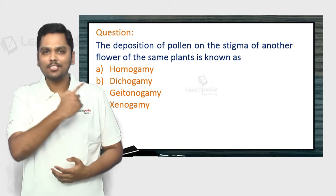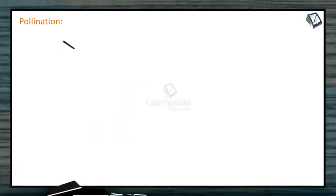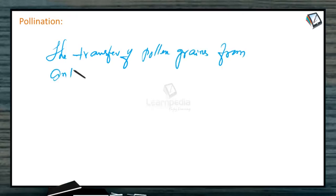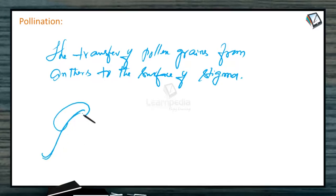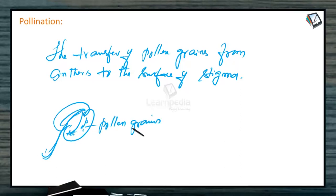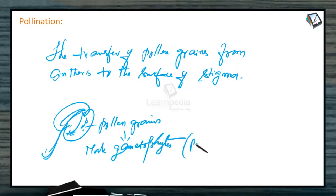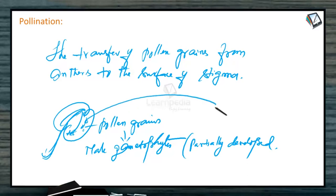To understand the concept behind this question, go ahead and watch this video. Pollination is defined as the transfer of pollen grains from anthers to the surface of the stigma. Pollen grains are produced by the stamens, the male reproductive organs of the flower. By the time they are liberated, they are actually partially developed male gametophytes. These pollen grains are carried by various agents and lodged on the surface of the stigma of the female reproductive organ. So this is pollination.